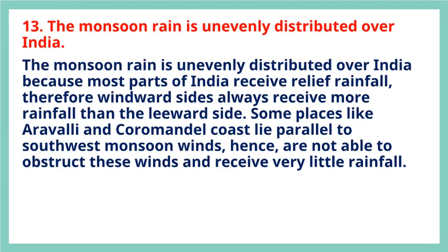Question 13: The monsoon rain is unevenly distributed over India. The monsoon rain is unevenly distributed because most parts of India receive relief rainfall, so windward sides always receive more rainfall than the leeward side. Some places like the Aravalli and the Coromandel coast lie parallel to southwest monsoon winds and hence are not able to obstruct these winds, receiving very little rainfall.